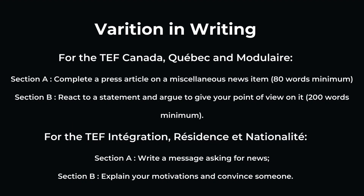There are also some variations when it comes to writing. For TEF Canada, Quebec, and Modulaire, Section A gives you a press article to complete in 80 words, and Section B requires a reaction to a statement giving your own point of view in approximately 200 words. For TEF Integration, Residence, and Nationality, Section A asks you to write a message asking for some kind of news, and Section B requires you to explain your motivations and convince someone to do something.